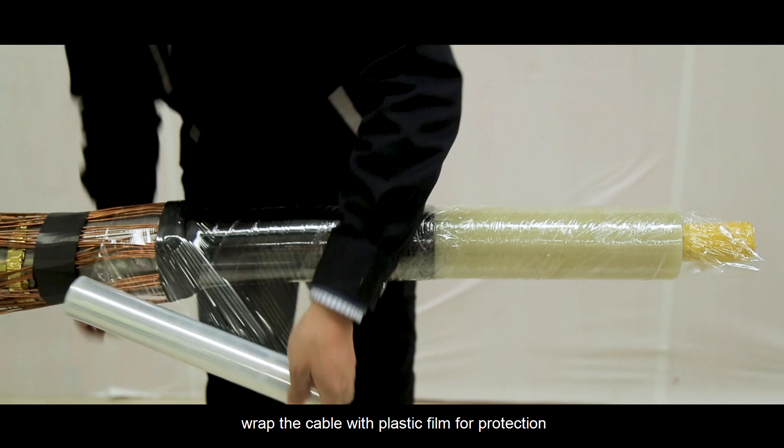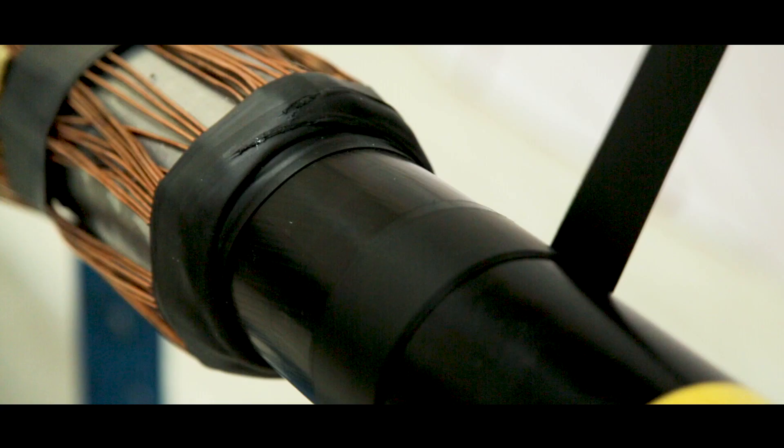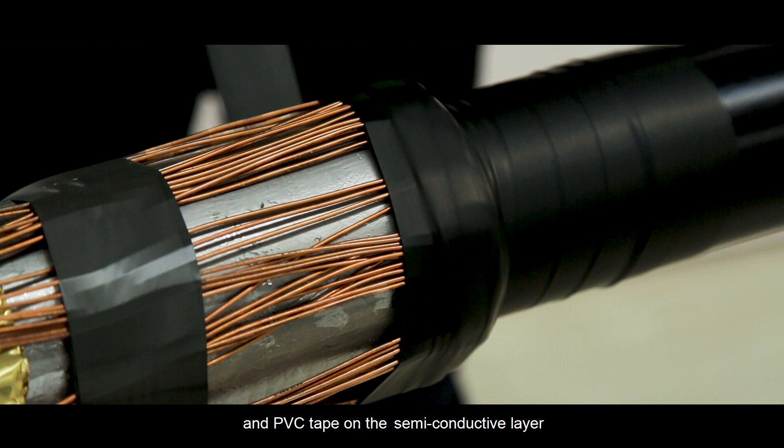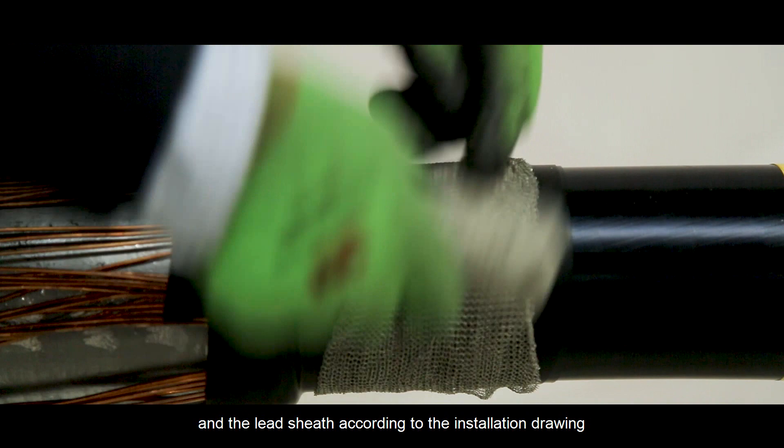After cable preparation, wrap the cable with plastic film for protection. Apply water blocking tape, semi-conductive tape, copper mesh, and PVC tape on the semi-conductive layer and lead sheath according to the installation drawing.